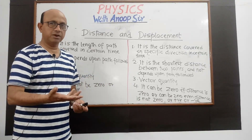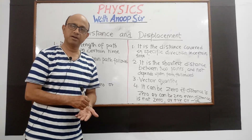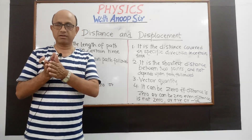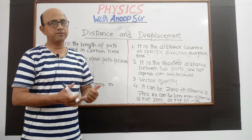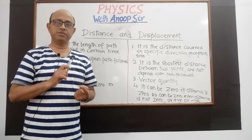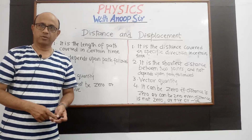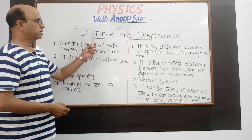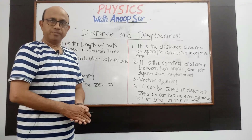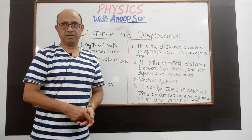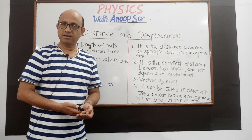If displacement is 0, we will not say distance is 0 — distance हुआ लेकिन displacement 0 हो गया। Displacement can be positive, negative, or zero, but distance will always be positive. Both distance and displacement की unit meter होती है। In the next module, we will be discussing speed and velocity — एक बहुत important topic — जिसके बारे में अगले module में discussion करेंगे। Thank you very much.